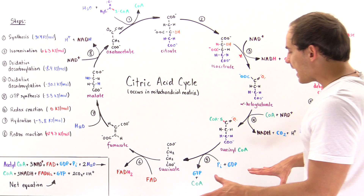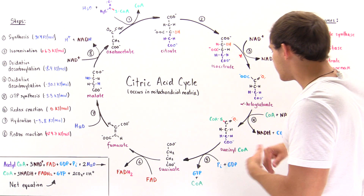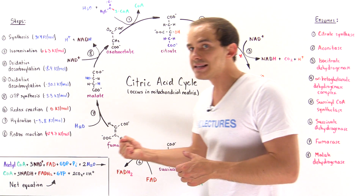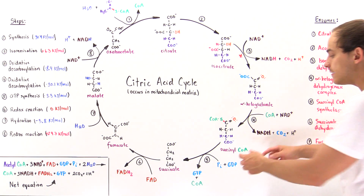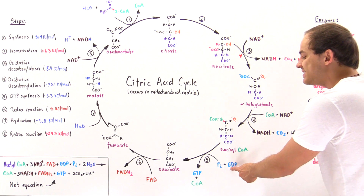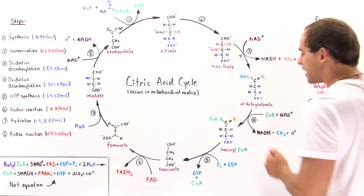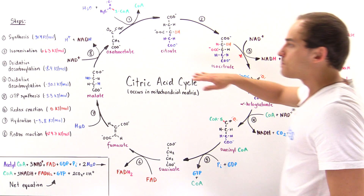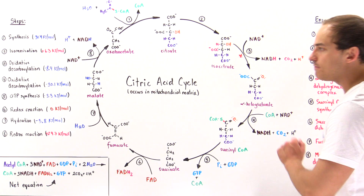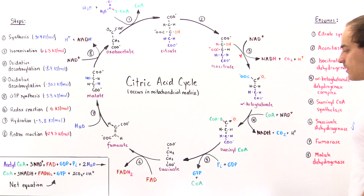What happens next is we cleave this high-energy thioester bond, releasing a certain amount of energy. That energy is used to drive the addition of orthophosphate onto GDP to form GTP. In the process, we release the coenzyme A. Step four releases negative 30.1 kilojoules per mole of energy, while step five releases negative 3.3 kilojoules per mole of energy.